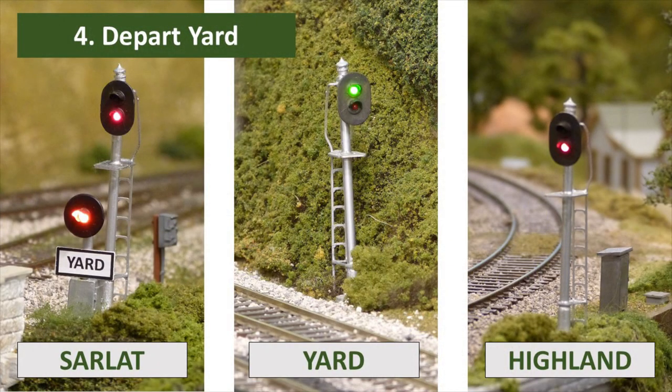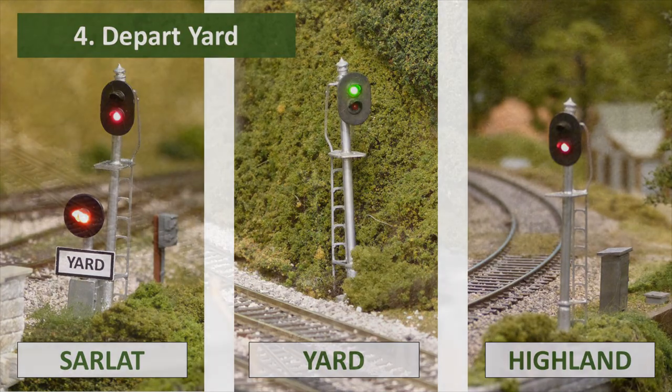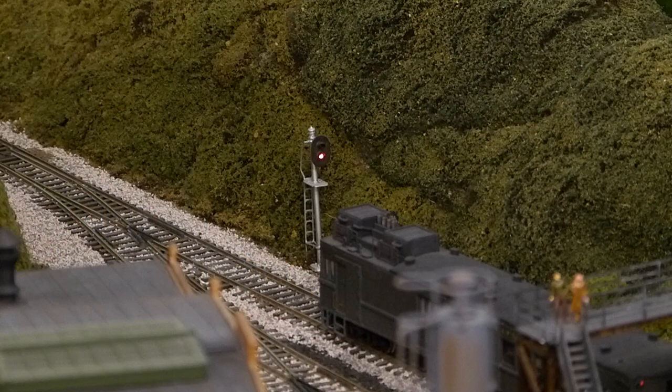Finally, if a train is ready to depart the yard, the block signal in the yard throat will show green once the Yardmaster has aligned the junction turnout for the yard. Since the Yardmaster did not flip the permission toggle switch on his control panel, the Arduino assumes that the Yardmaster has a train departing the yard.